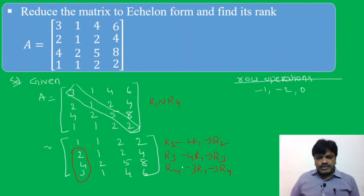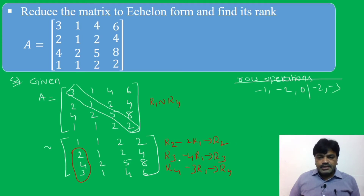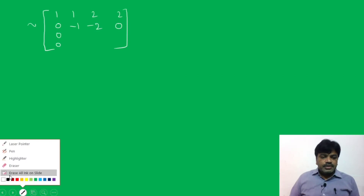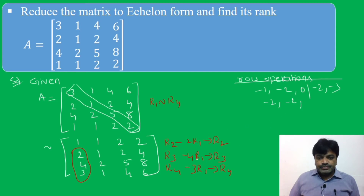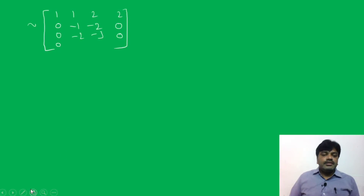Next, R3 minus 4R1: [2-4, 5-8, 8-8] = [-2, -3, 0]. Row 3 becomes [0, -2, -3, 0]. Then R4 minus 3R1: [1-3, 4-6, 6-6] = [-2, -2, 0]. Row 4 becomes [0, -2, -2, 0].